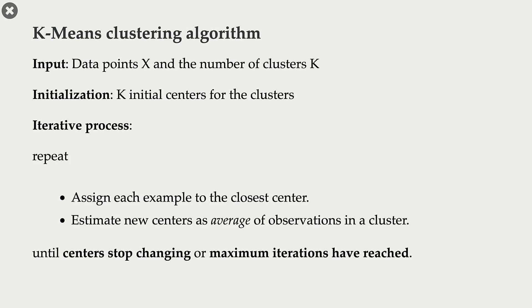The input of the algorithm is the set of data points X and the number of clusters K. The first step is initialization — we pick K centers randomly for the clusters. These centers are not going to be good in any particular way; they are just random centers. Our hope is that we improve these cluster centers iteratively and at some point converge to a reasonable solution.